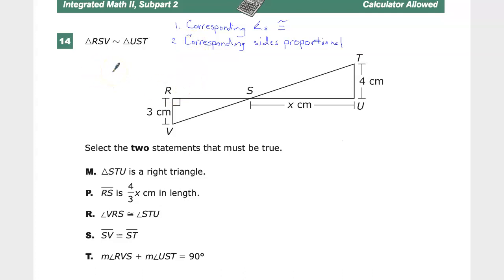Also, I know which angles are corresponding because they've given me a similarity statement. Angle R has to be corresponding with angle U. So that means that this is true. This is a right angle, so is this. Angle S is corresponding to angle S. And angle T is corresponding to angle V.